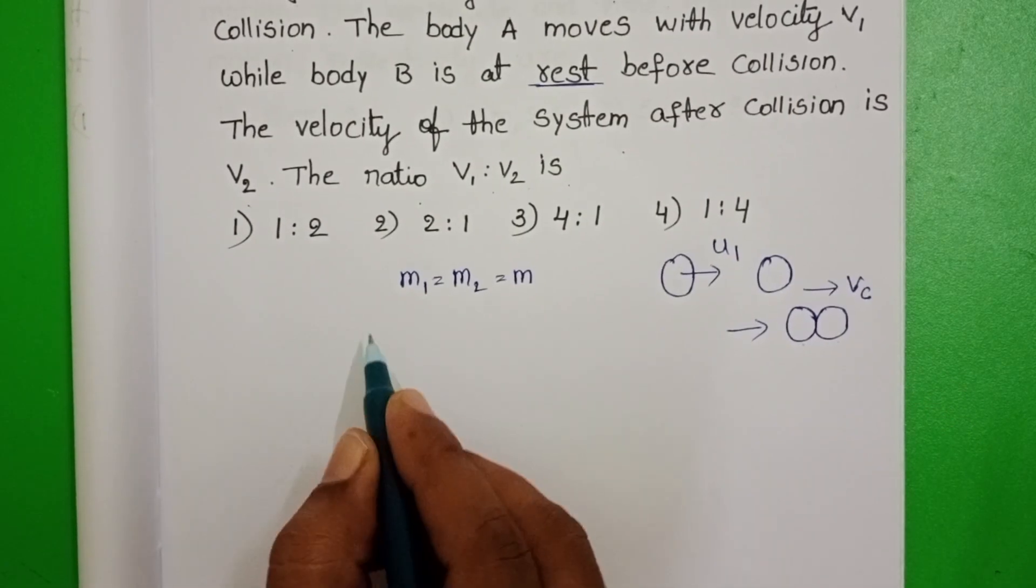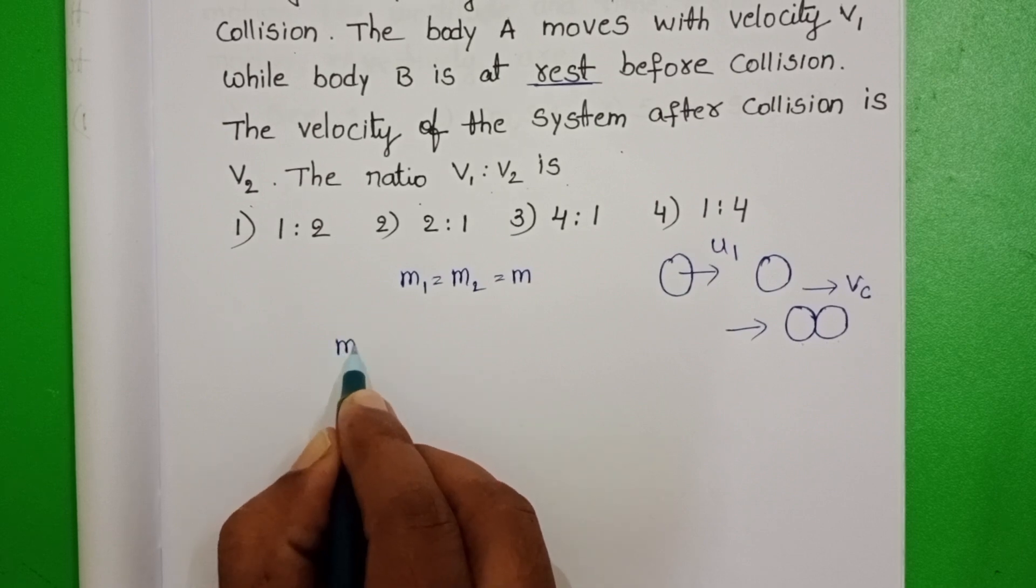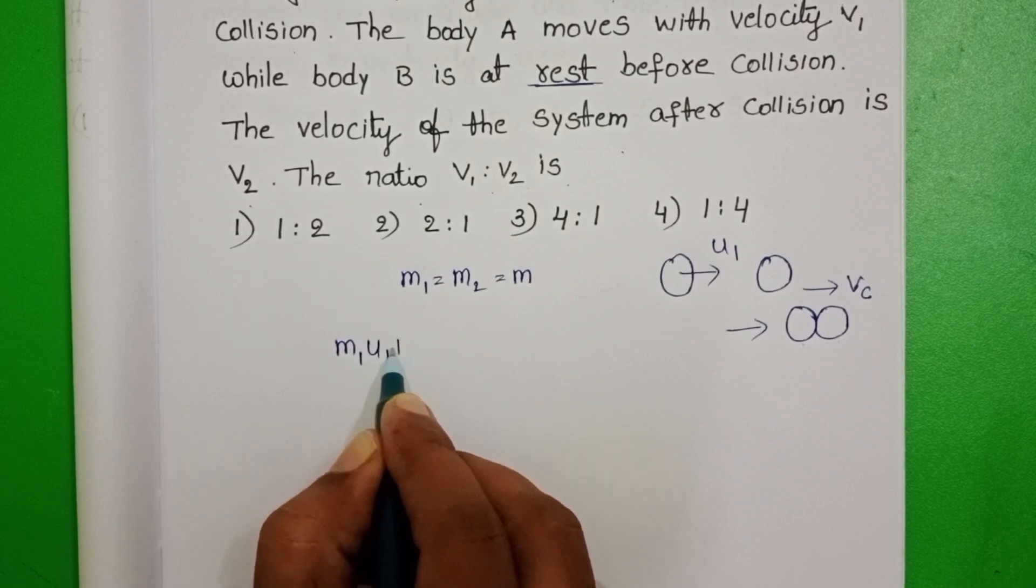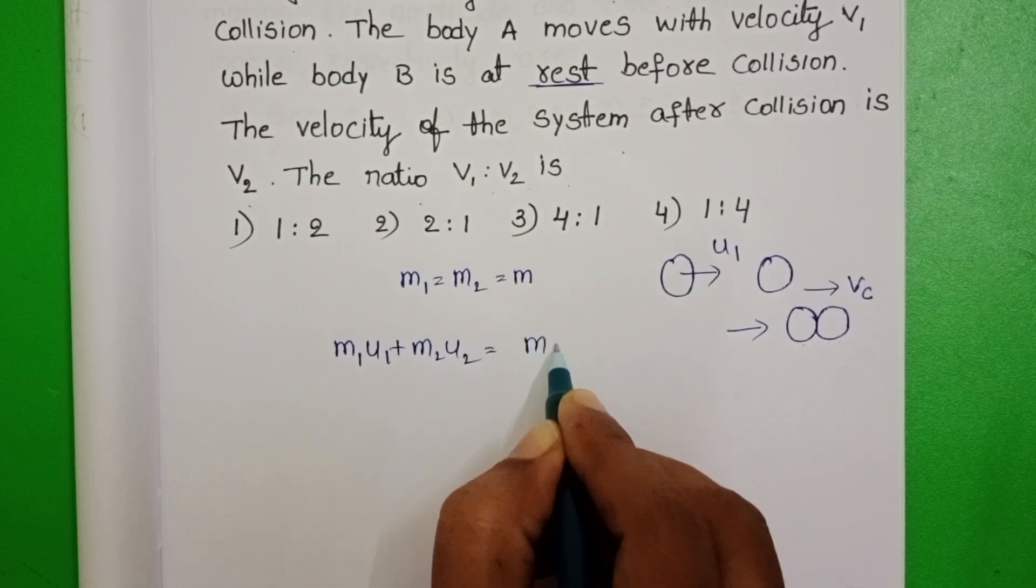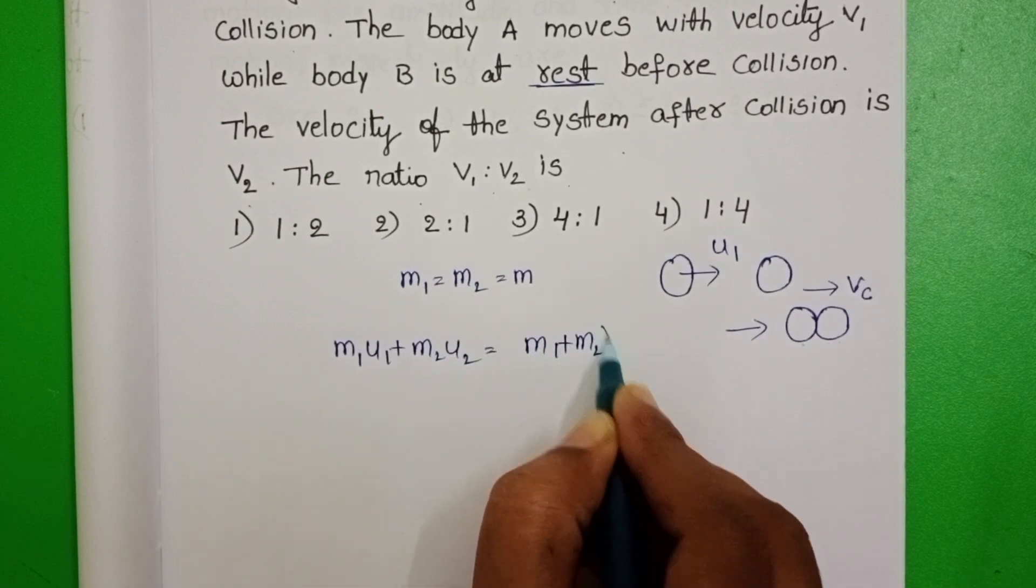Take the law of conservation of momentum principle here. M1 U1 plus M2 U2 equals M1 plus M2 into Vc.